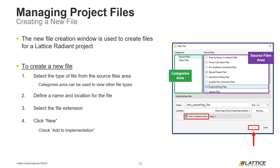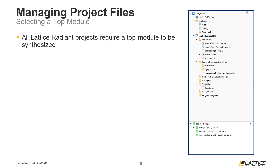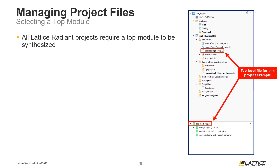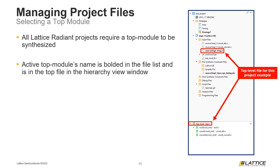Now that we've discussed the ways files can be added to a Radiant project, we're going to discuss some of the ways these files can be managed. Every Radiant project requires a top module. Radiant will attempt to automatically determine which file is the top module of a project; however, it is not always correct in doing so. The current top module of a project can be seen in the File List tab and the Project Hierarchy window. In the File List tab, the current top module will have its name in bold. In the Project Hierarchy window, the top module will be the file at the top of the window.